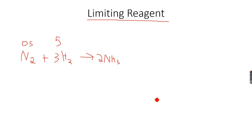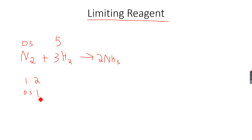We know that the ratio between nitrogen and ammonia is 1:2, so according to this ratio, 0.5 moles of nitrogen will form 1 mole of ammonia. We also know that the ratio between hydrogen and ammonia is 3:2.